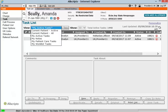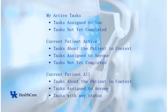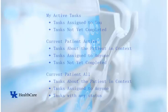There are at least three available views for you to see tasks. The My Active Tasks view is very similar to your email inbox — it contains tasks that are not yet completed and are assigned to you. This is the default view when you first access the task list screen. Current Patient Active is a view where you can see all tasks about the patient in context that are not yet completed, no matter who they are assigned to. Finally, Current Patient All will allow you to see every task about a patient, no matter who it is assigned to and no matter what its current status is. This is the only place where you can see completed tasks.